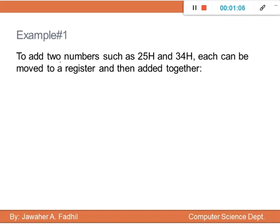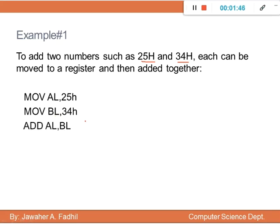To add two numbers such as 25h and 34h in hex, each number can be moved to a register and then added together. Since it is just one byte, we can use any register. For example, move 25h to AL and the second value to BL. Then we can choose AL to store the result by writing ADD AL, BL.